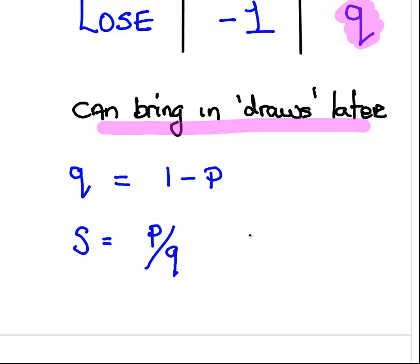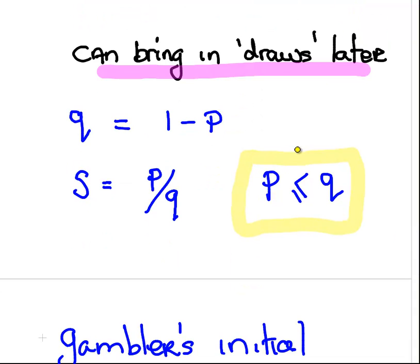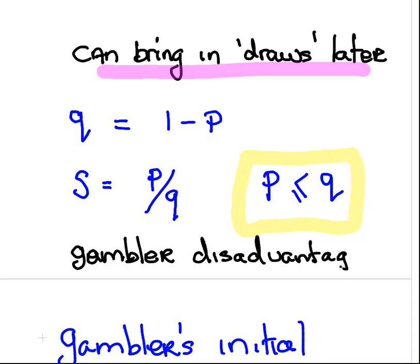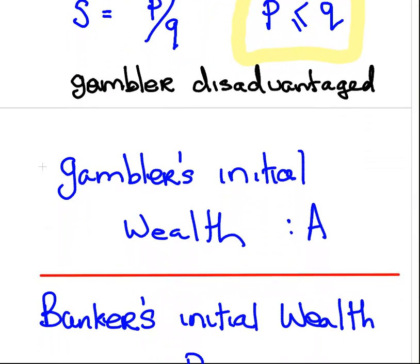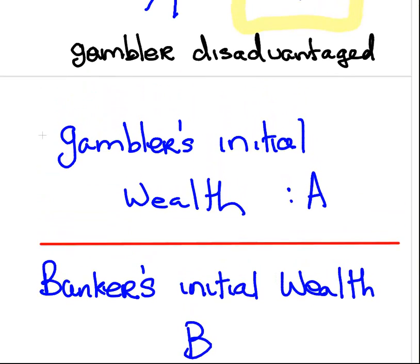In general, in the gambler's ruin problem, the probability of winning is less than or equal to the probability of losing. Usually the gambler is at a slight disadvantage in these problems. The gambler is disadvantaged in terms of probability. It's never considered that he has a better than average chance. The best he can hope for is 50%, but quite often in these problems, it would be less than 50%, like 0.45 or something like that.